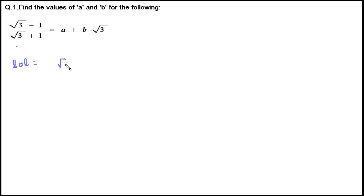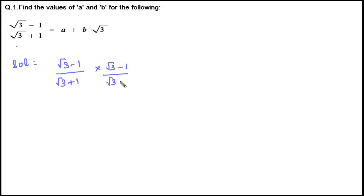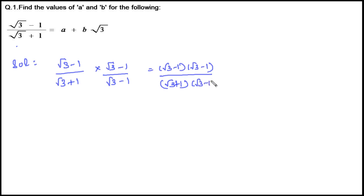The question given is (√3 − 1) / (√3 + 1). In order to simplify, we will take the rationalization factor for this denominator. As you know, the rationalization factor for this is (√3 − 1). So let's multiply with that in both numerator and denominator. That equals (√3 − 1)(√3 − 1) divided by (√3 + 1)(√3 − 1).